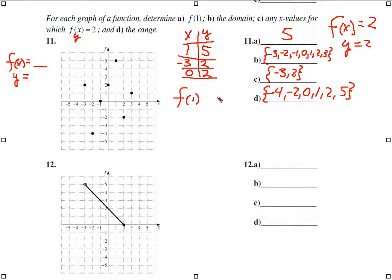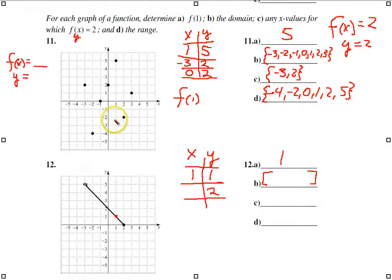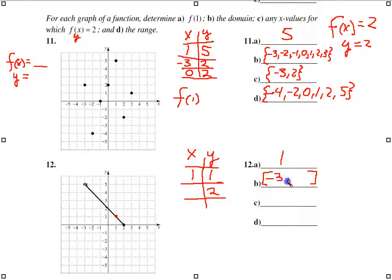Now we'll do the same thing for number 12. When X is 1, you put a 1 in the chart. What will Y be? Y will be 1 when X is 1. For the second part, they want the domain. It's going to start at -3 and go to 2, so the domain in interval notation is [-3, 2].